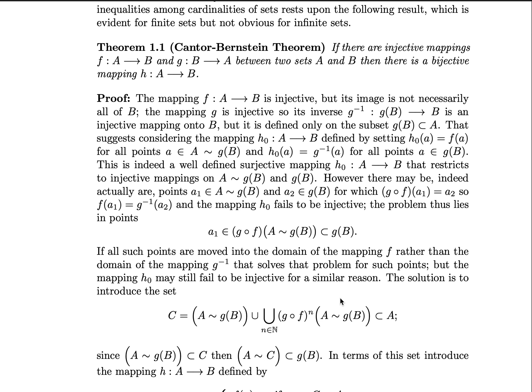And the problem lies in those points. In those points, a₁ is an element, are all those a₁s that are elements of the composition g ∘ f(A ∖ g(B)), which is a subset of g(B).